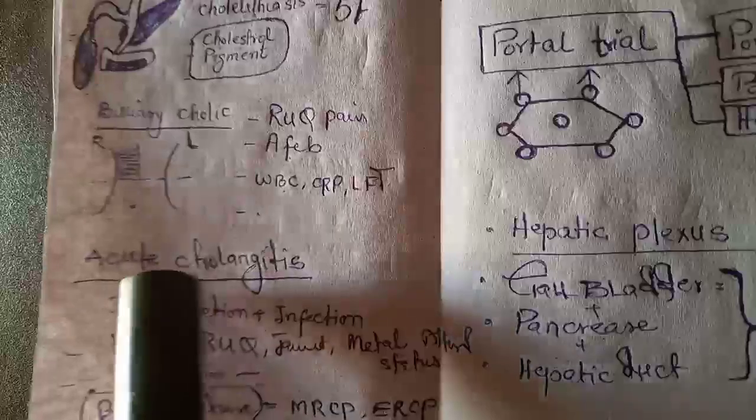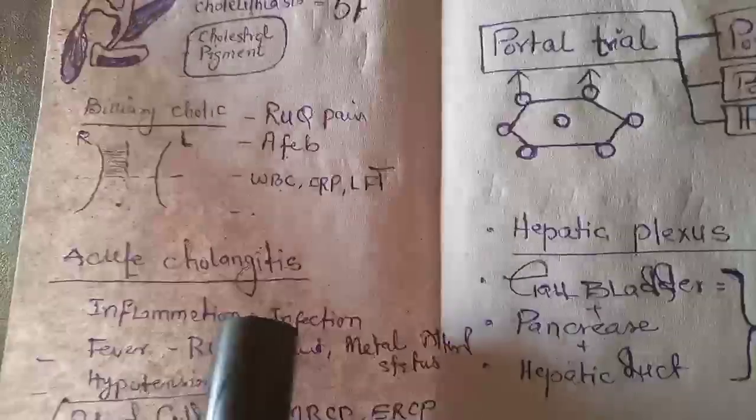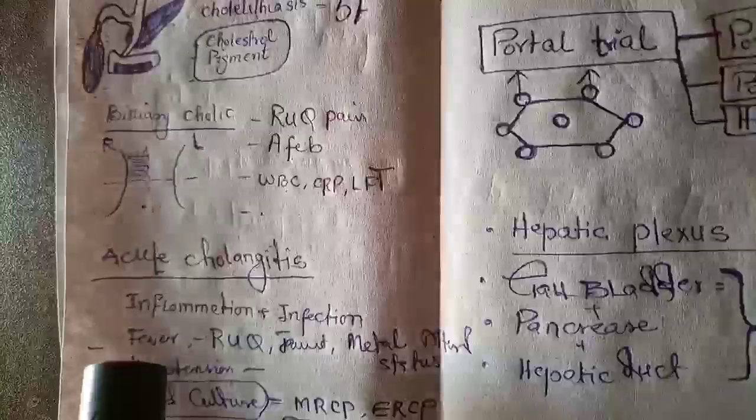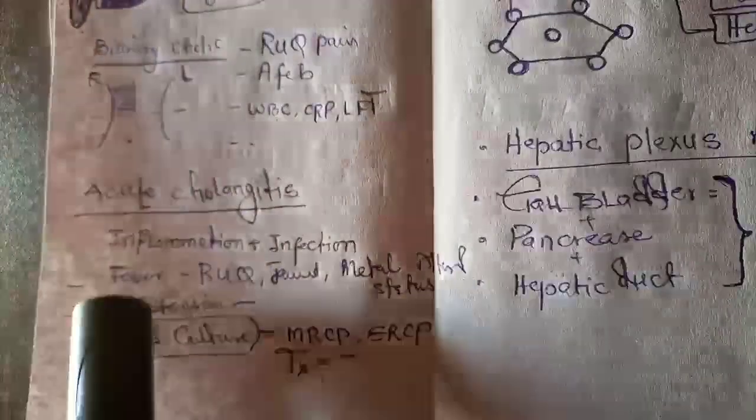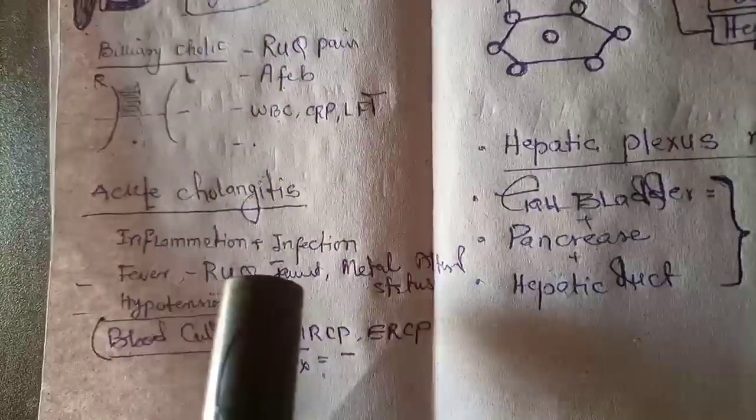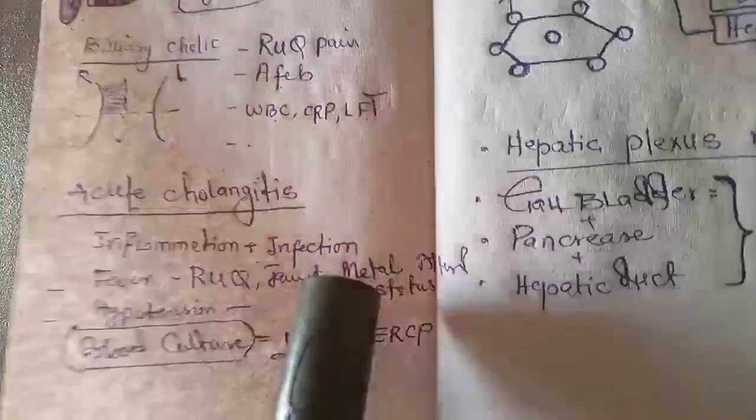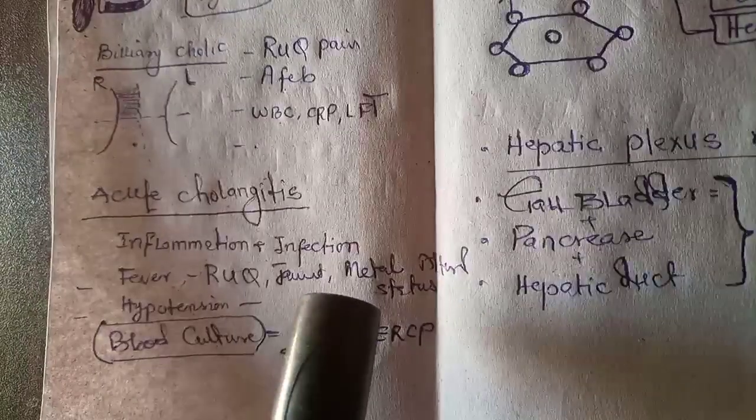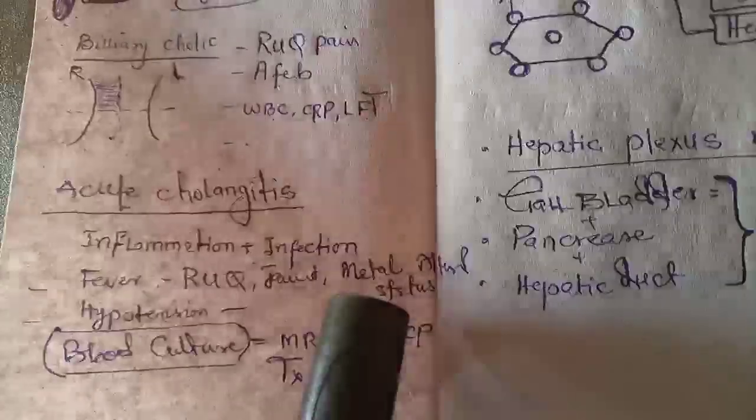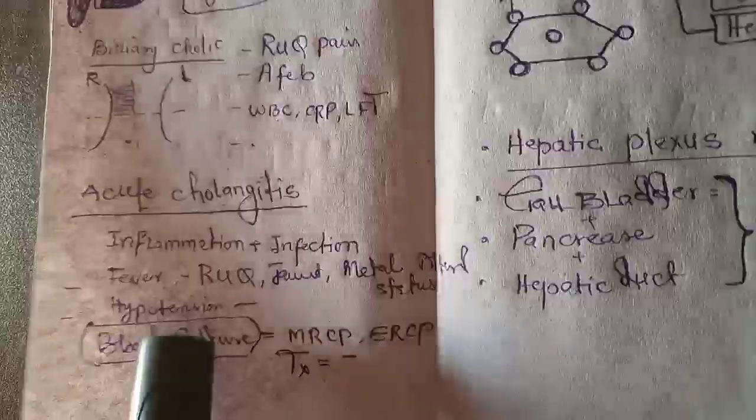Acute cholangitis: inflammation and infection of common bile duct, and then fever will be there, right upper quadrant pain will be there in the patient, jaundice, and our mental status will be altered and hypotension will be there in the patient.